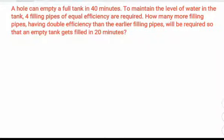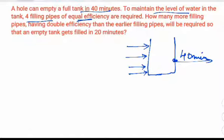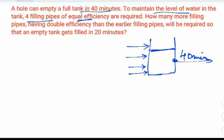The question states that a hole can empty a full tank in 40 minutes, and to maintain the level of water we require four filling pipes of equal efficiency. There is a tank with a hole draining it in 40 minutes, and when all five — four filling pipes and the one draining hole — are working together, the level of water is maintained. This means the amount of water being drained equals the amount being filled.